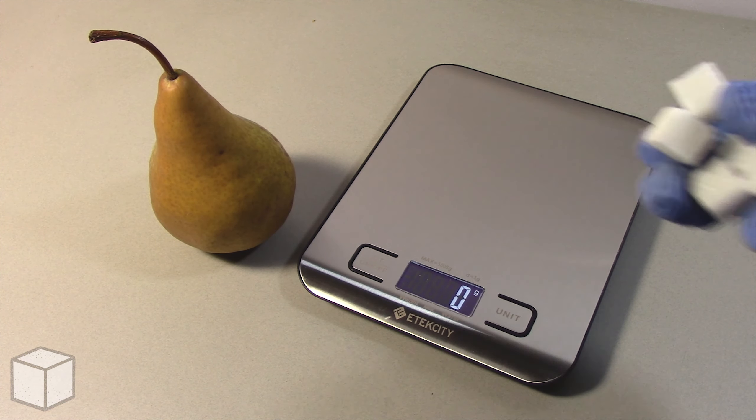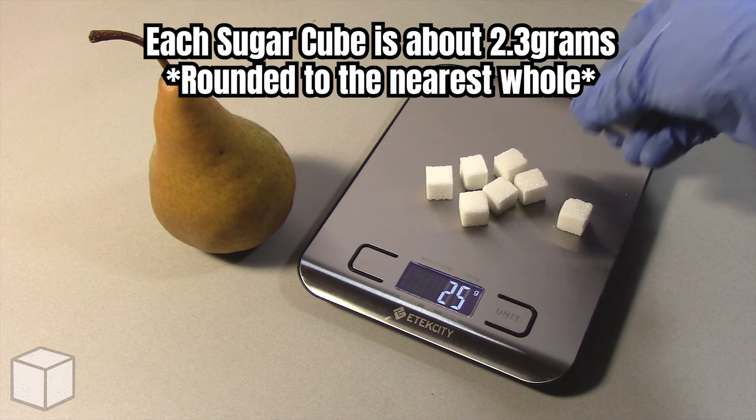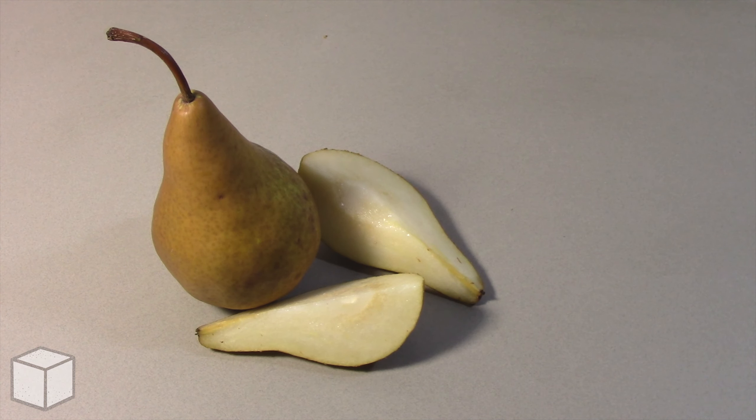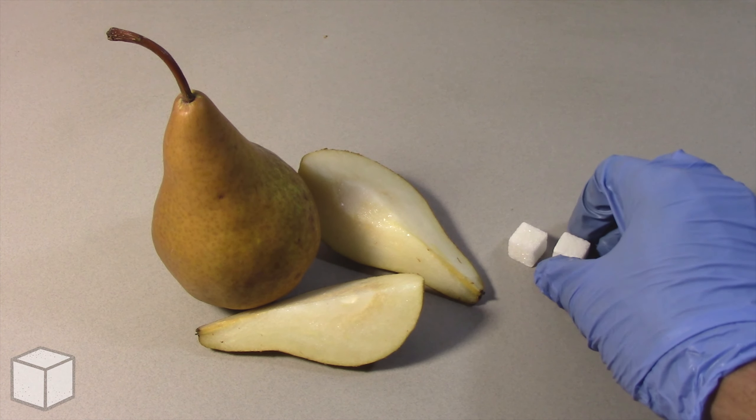And now I'll show you the equivalence of this using sugar cubes. Each cube is about 2.3 grams. So in conclusion this pear is loaded with roughly 7 cubes of sugar.